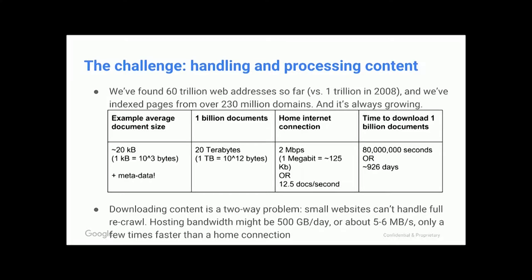Even if you could brute force processing the web addresses we see — something like 60 trillion web addresses, about 70% of them duplicates — we've indexed pages from over 230 million domains, and the web just keeps growing. We see average document sizes where a billion documents is something like 20 terabytes. A home Internet connection can download about 2 megabits per second, or 12.5 documents per second. If you tried to download this data over a home Internet connection, you're looking at something like 926 days.